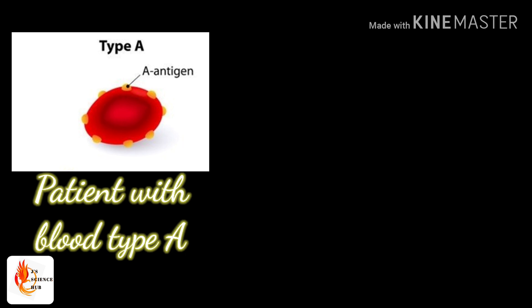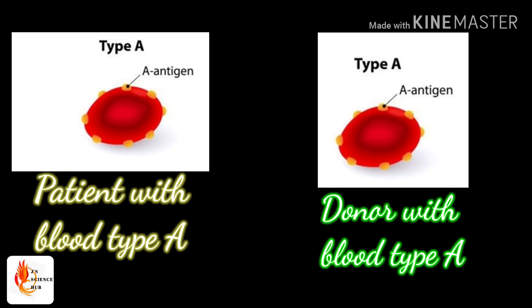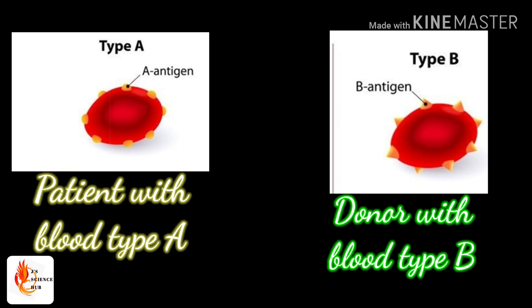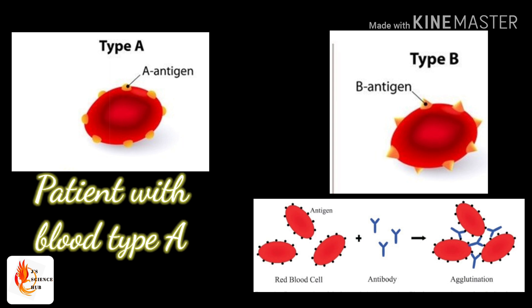If a patient has blood group A, it means their blood has antigen A. So if you supply blood from a donor who has blood group A, the patient's blood has antigen A and the blood being transfused also has antigen A. So the body will consider it as a self antigen and there is no problem. But if you transfer blood from a donor with blood group B, you are transfusing blood with antigen B, which is not present in the patient's blood. So the patient's immunity system starts to produce antibodies against antigen B, agglutination will take place, and the person can face severe issues and even death.